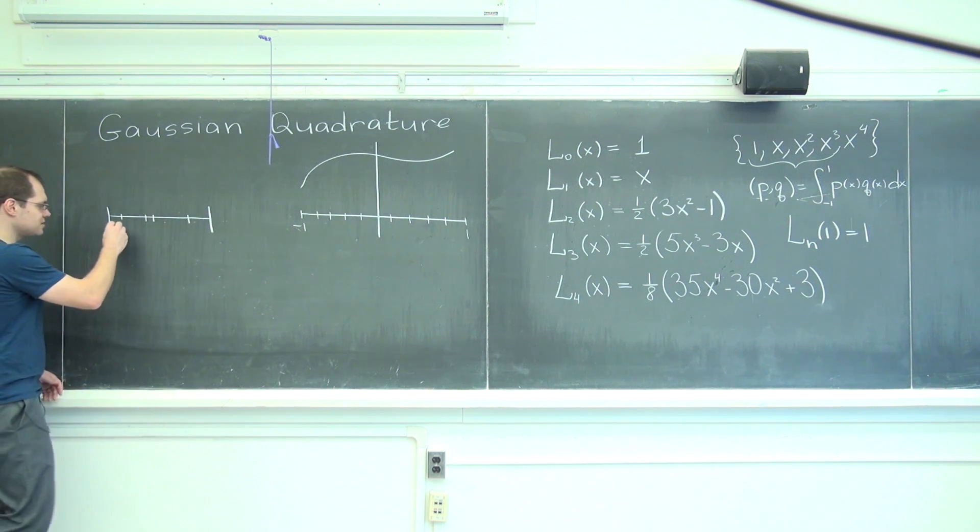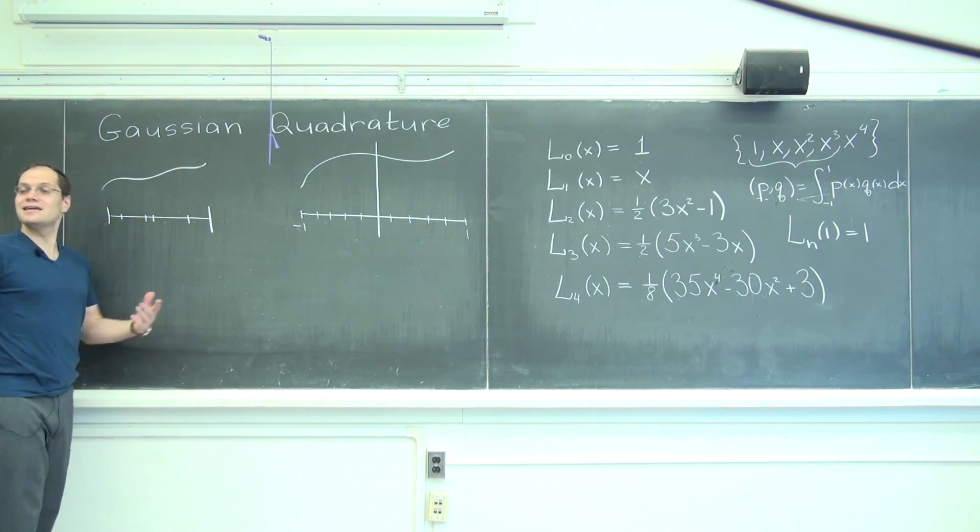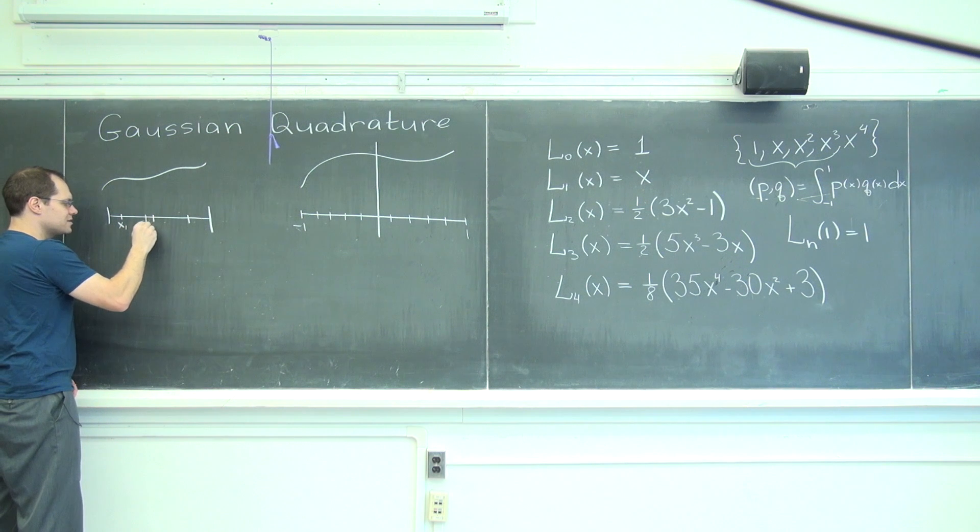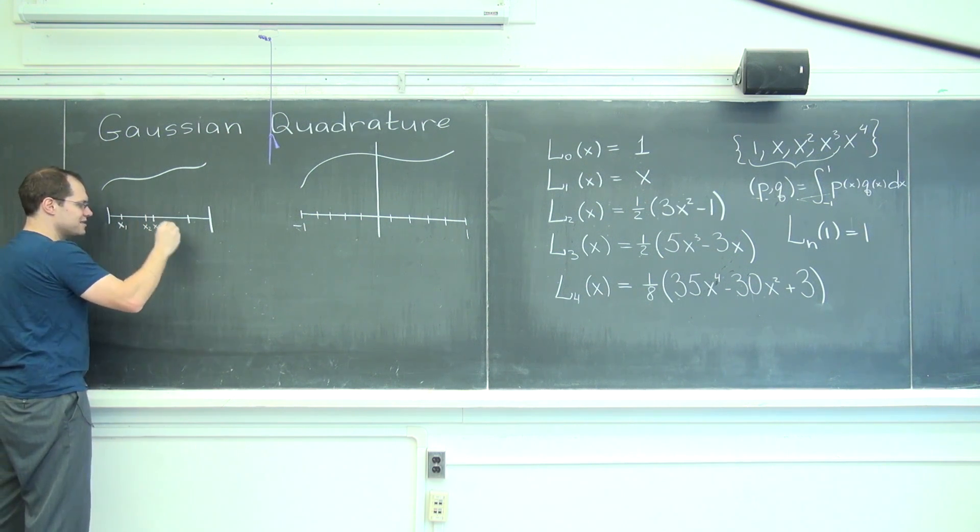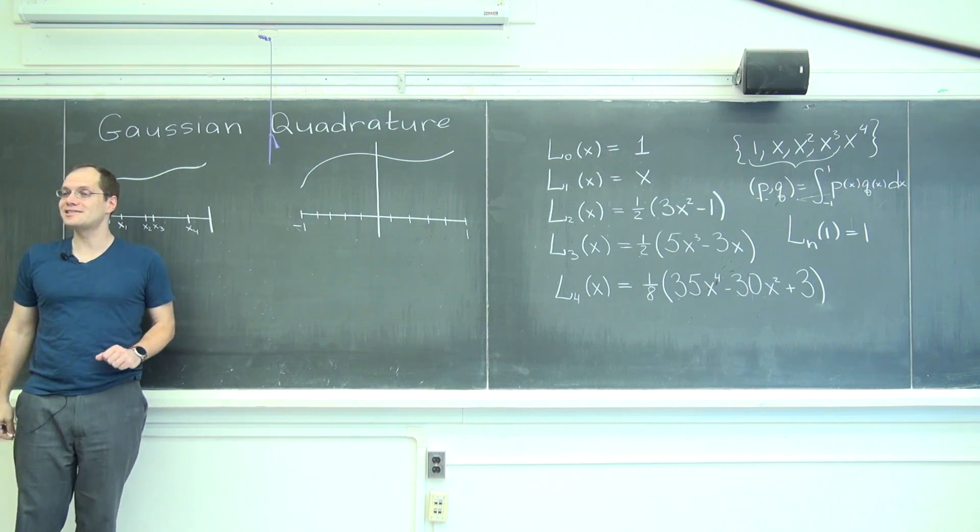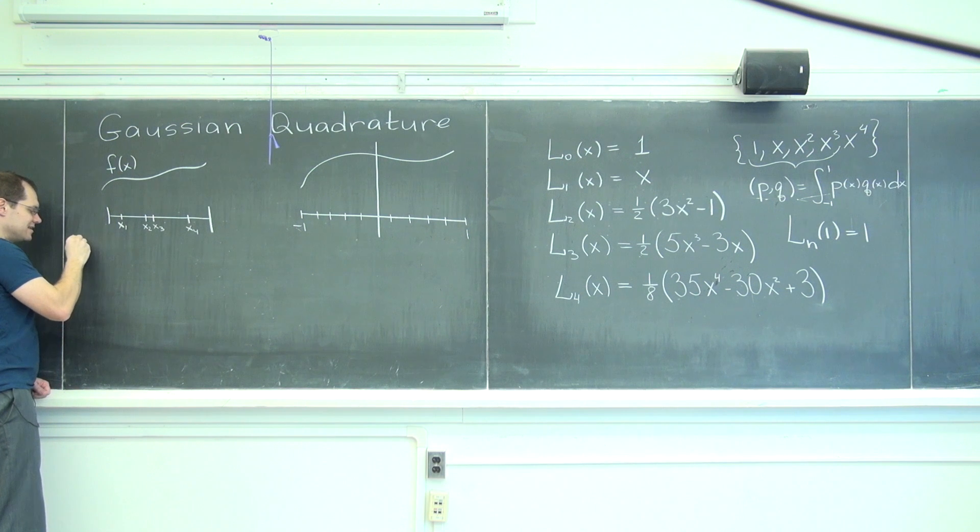Well, here's what you would do. Not surprisingly it ends up being a linear algebra problem. Let me call them x1, x2, x3, and x4. So our scheme is to take whatever function of x we have and to say that the integral of f is approximately some weight w1 times f evaluated at x1.